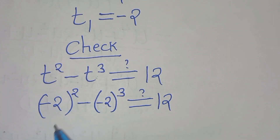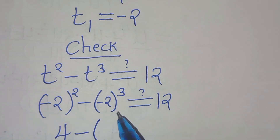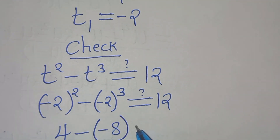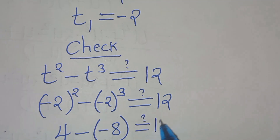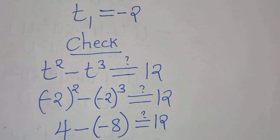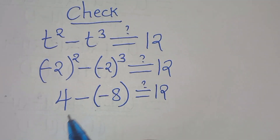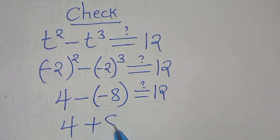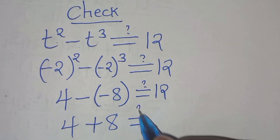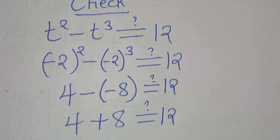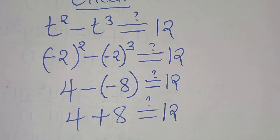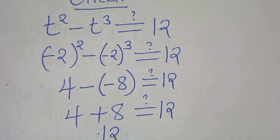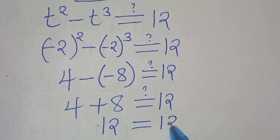Minus 2 squared is 4. Minus 2 cubed is minus 8. So we have 4 minus negative 8, which is 4 plus 8, giving us 12, which equals 12. The verification confirms our solution.